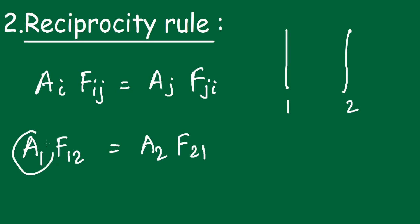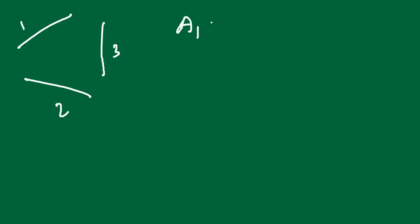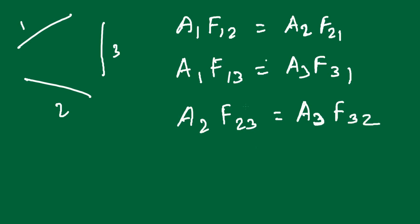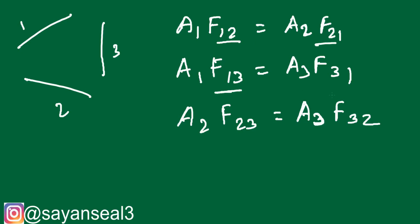If we know the surface areas A1 and A2, we get a relationship between F12 and F21. For three surfaces, I can write: A1 × F12 = A2 × F21, also A1 × F13 = A3 × F31, and A2 × F23 = A3 × F32. By substituting the values of A1, A2, A3, we get relationships between F12 and F21, F13 and F31, and F23 and F32.